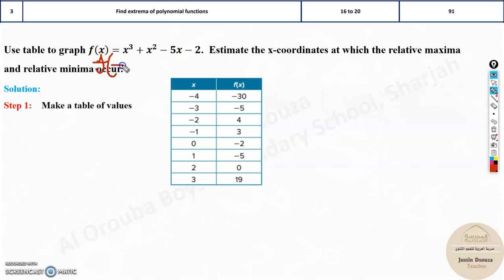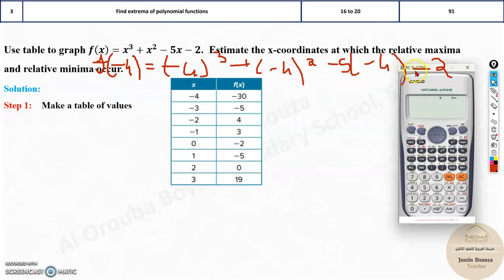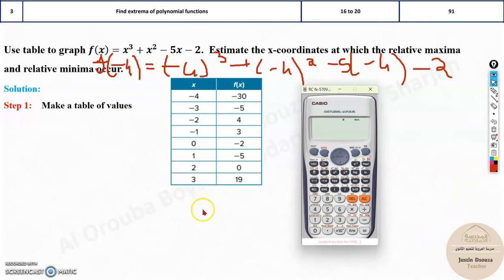How would you do this? You have to just put x as minus 4 and then solve it. Instead of x, it will be minus 4 cubed plus minus 4 squared minus 5 times minus 4 minus 2. For one value, it's fine. It's not easy. It takes time. But it's going to take a long time to do all these values.